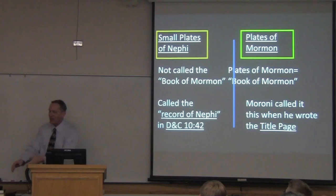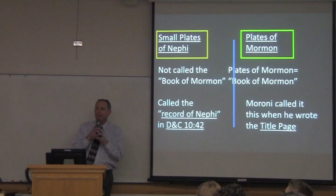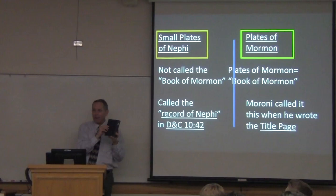One is more of an ancient Near Eastern record written by authentic natives of the Near East. Most of it was written by Nephi and Jacob, Hebrew speakers, in the 6th century BC. And the other one is from the 4th century AD by authentic Native Americans who were separate from Nephi by 900 years.